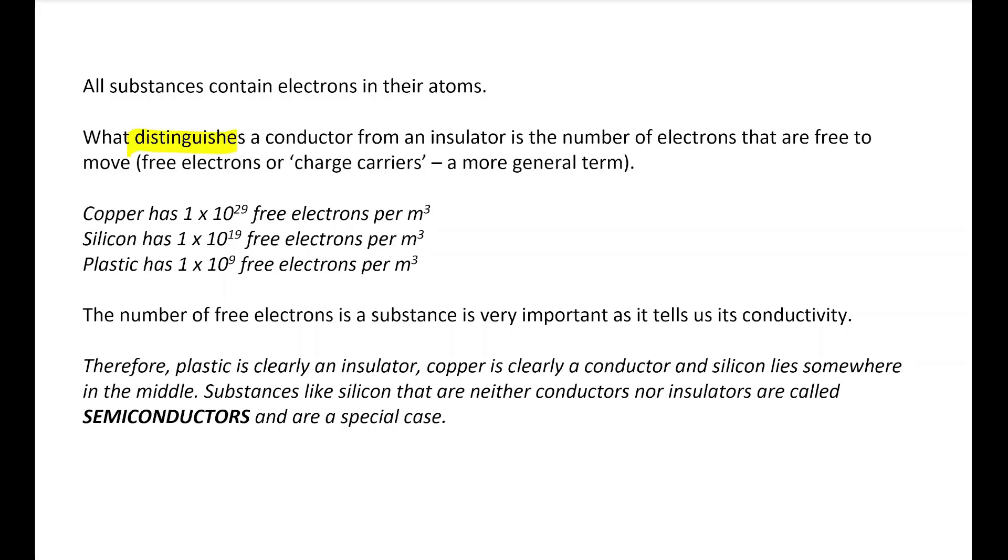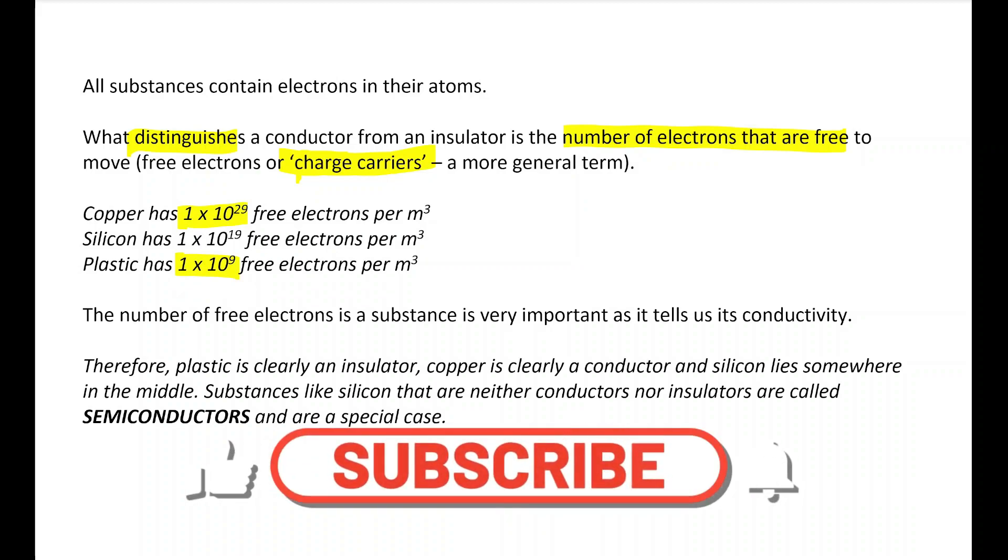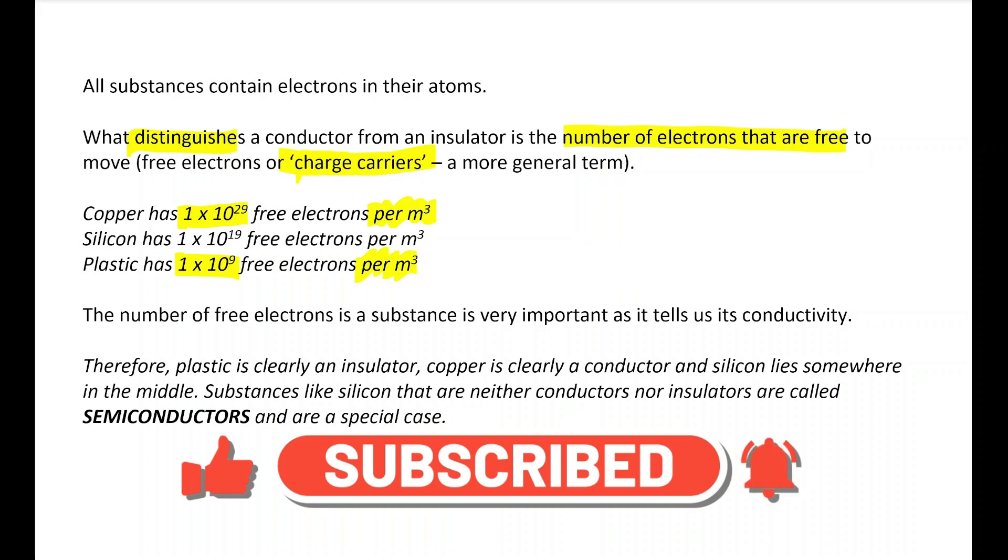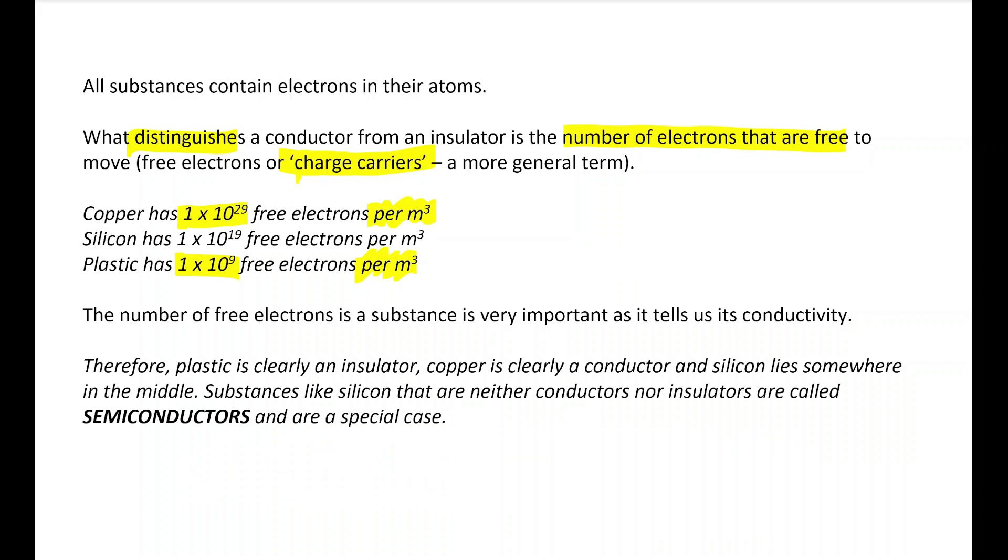But actually, we now need to be able to quantify that and give it a number. And what distinguishes a conductor from an insulator is the number of what we call free electrons, or again, charge carriers. And if you look at the numbers, you can see the difference between copper and plastic, for example, 1 times 10 to the 29 free electrons per meter cubed, because we count it per unit volume, as opposed to 1 times 10 to the 9 free electrons per meter cubed for plastic. We call this constant, this value, n, which is our charge carriers per meter cubed. So it has the unit per meter cubed. And this gives us an idea of the conductivity of the substance. And it tells us that plastic is an insulator, very few free electrons, not none, but very few relatively. And that copper is a conductor. And that silicon, which is a substance called a semiconductor, that we will get back to later, sits somewhere in the middle of those.